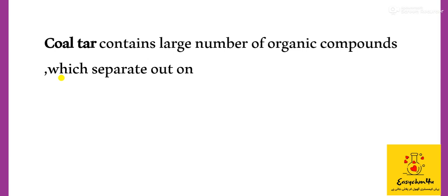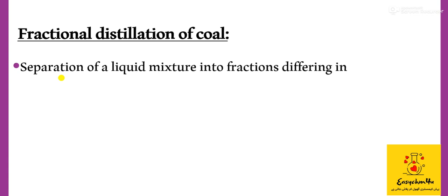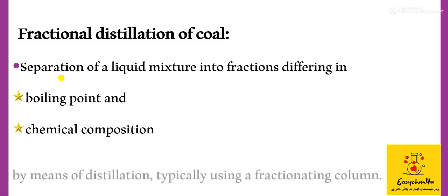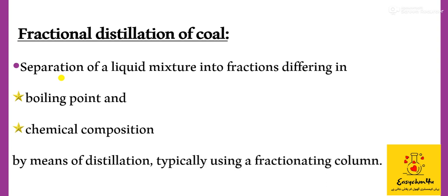Coal tar contains a large number of organic compounds which separate out on fractional distillation. Fractional distillation is the separation of a liquid mixture into fractions differing in boiling points and chemical composition by means of distillation, typically using a fractionating column.